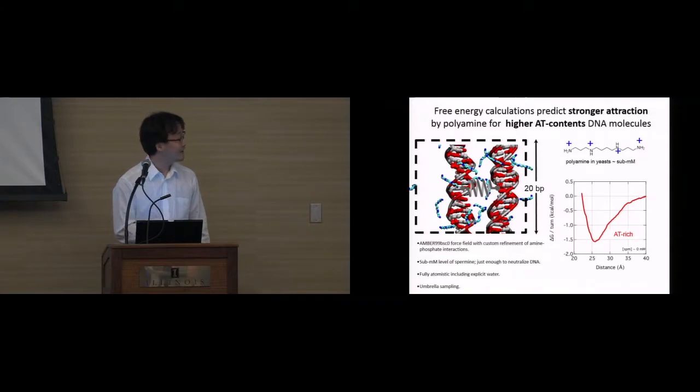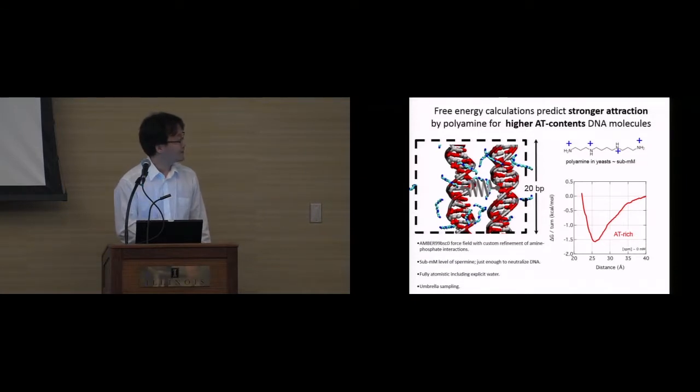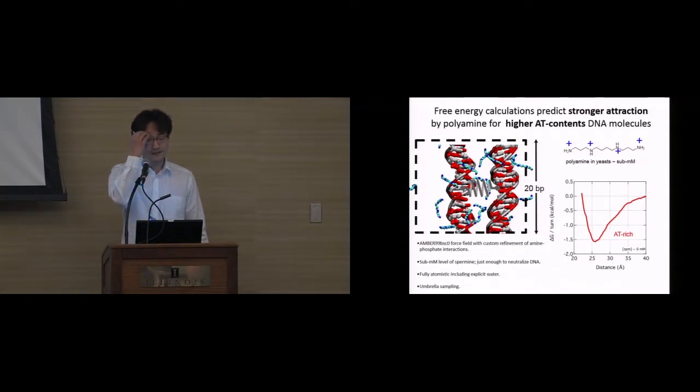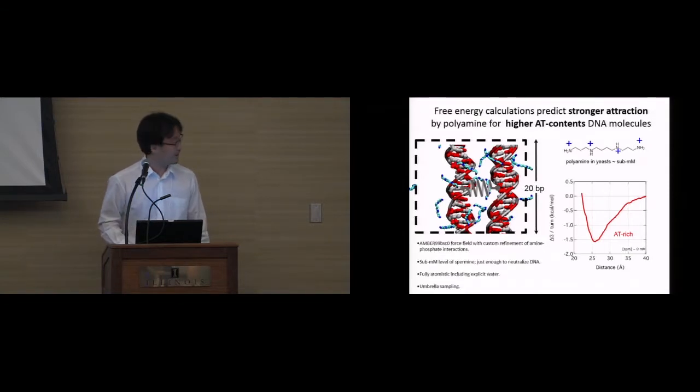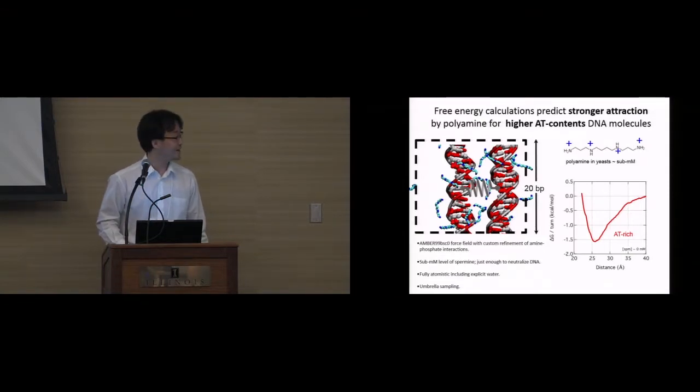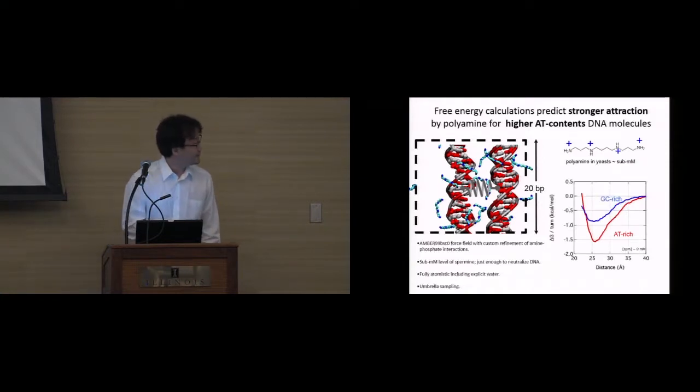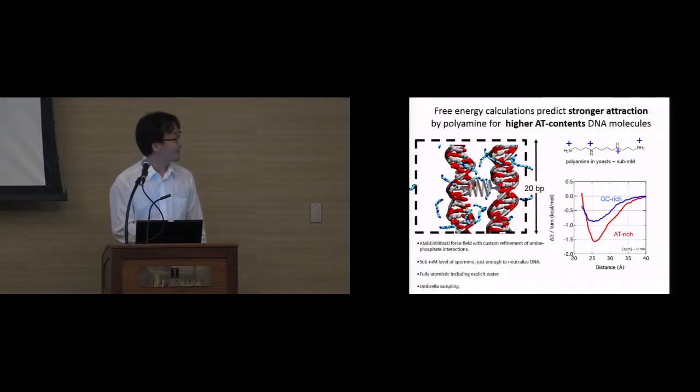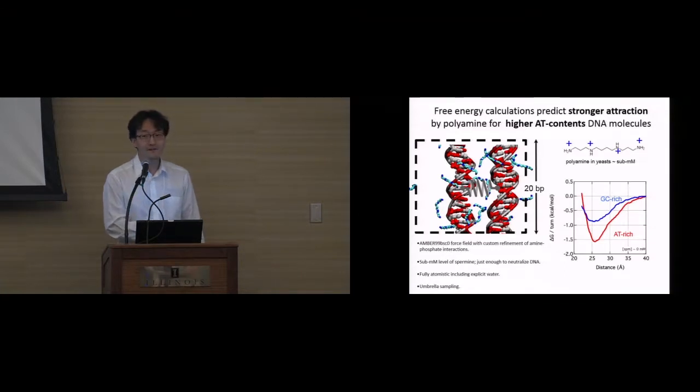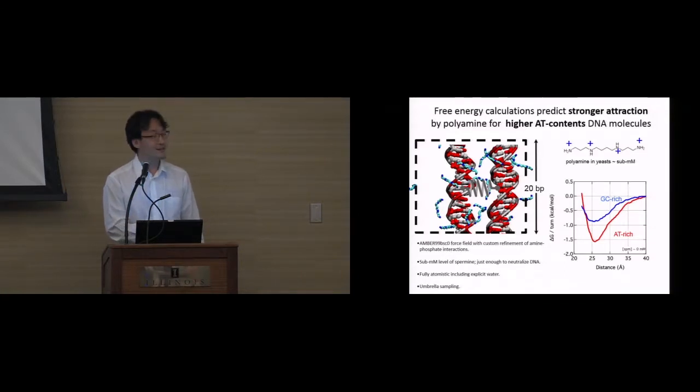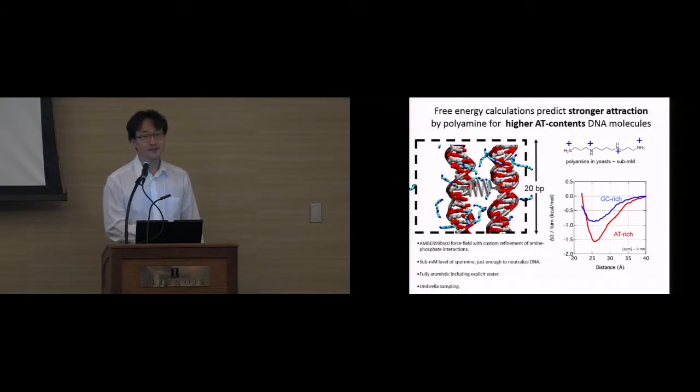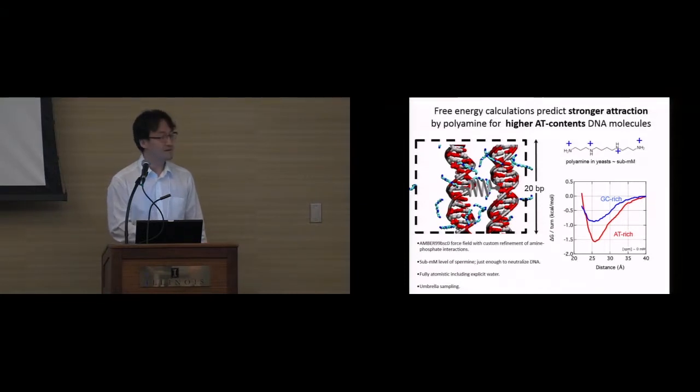So we performed quite standard method to compute the interaction free energy between two DNA molecules. And for example, the result for 8-rich segment is shown here. So we see quite stable attraction between two DNA molecules, which attraction is induced by polyamines. And this one is not surprising, and this one is well known for more than 30 years. But what is surprising is that the magnitude of the attraction depends on AT content. For example, when I compute the same interaction free energy for GC-rich DNA segment pair, then still it is attractive, but the magnitude of the attraction is only about half of that for 8-rich segment.